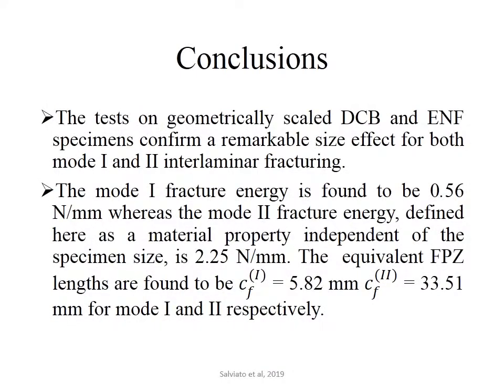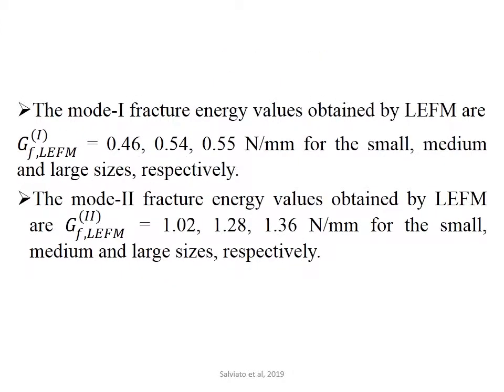These are the conclusions. Tests on geometrically scaled DCB and ENF specimens show a remarkable size effect for both mode 1 and mode 2 interlaminar fracturing. The mode 1 and mode 2 fracture energies are found to be 0.56 and 2.25 N/mm respectively. CF1 and CF2 values are calculated for mode 1, and from the LEFM approach, GF values are calculated for small, medium, and large specimens for both mode 1 and mode 2 fracture energy.